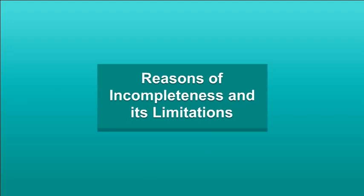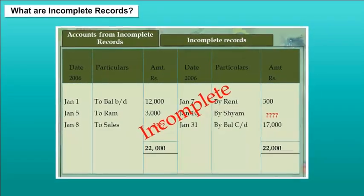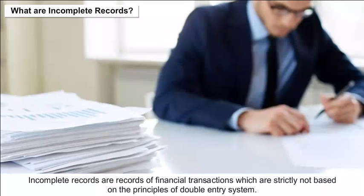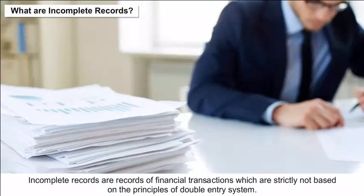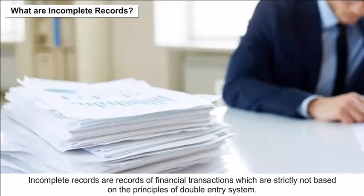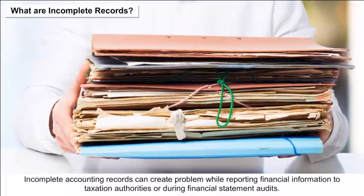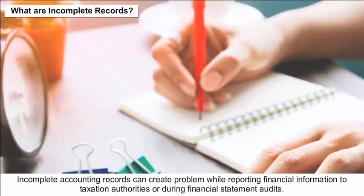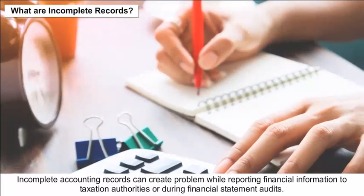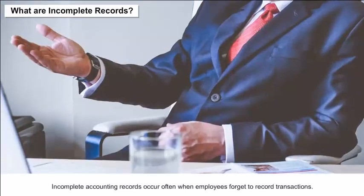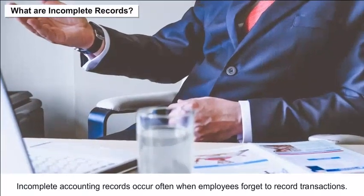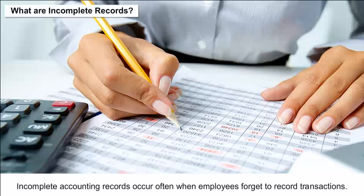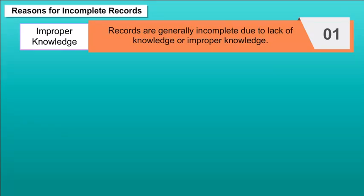Reasons of incompleteness and its limitations: Incomplete records are records of financial transactions which are strictly not based on the principles of the double entry system. Incomplete accounting records can create problems while reporting financial information to taxation authorities or during financial statement audits. Incomplete accounting records occur often when employees forget to record transactions.